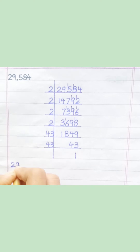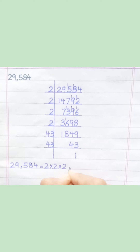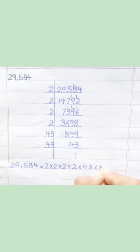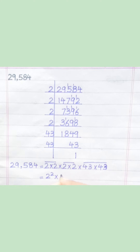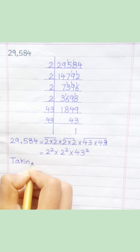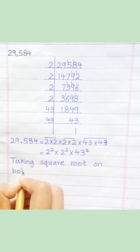29,584 equals 2 square multiply 2 square multiply 43 square. Taking square root on both sides.